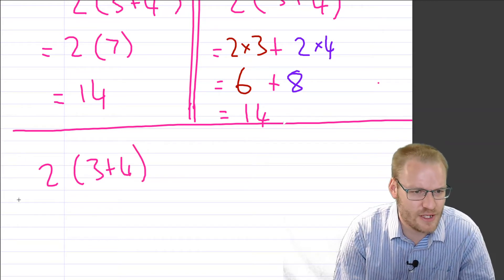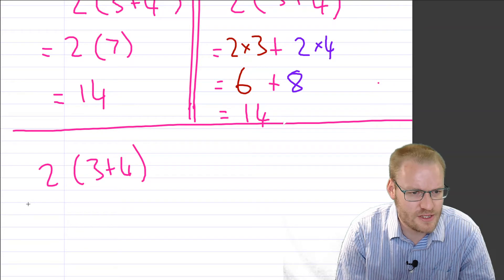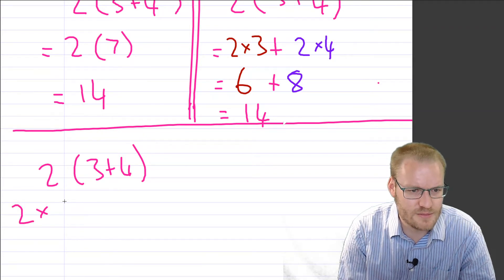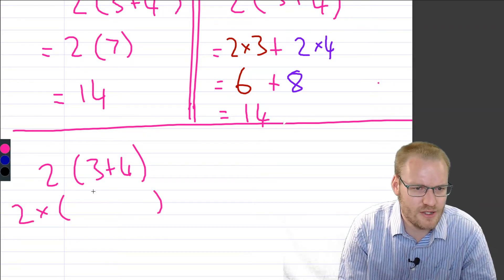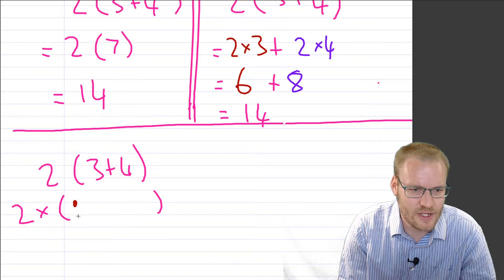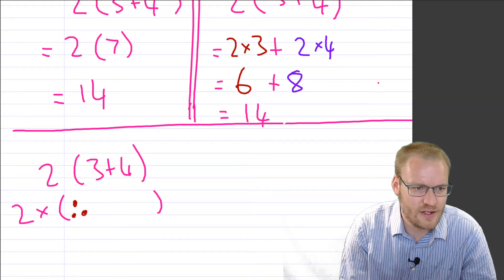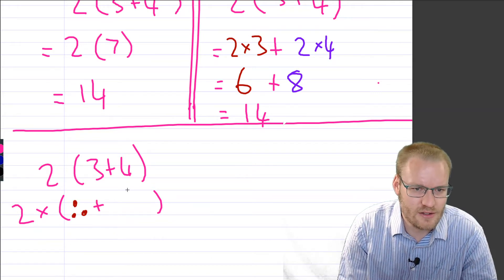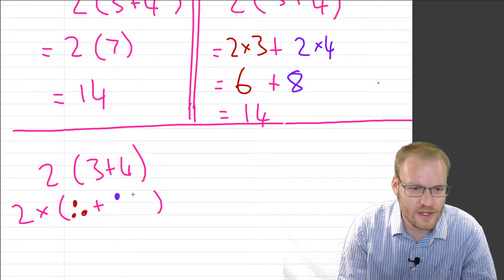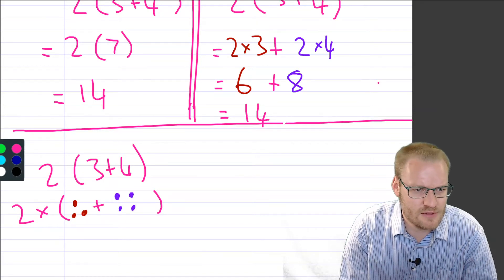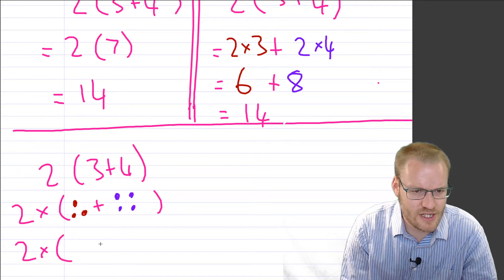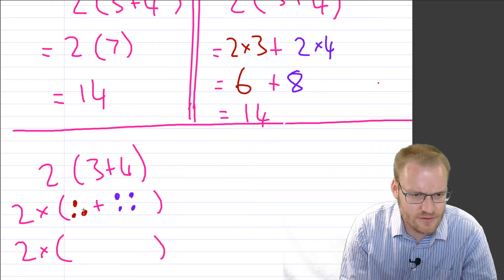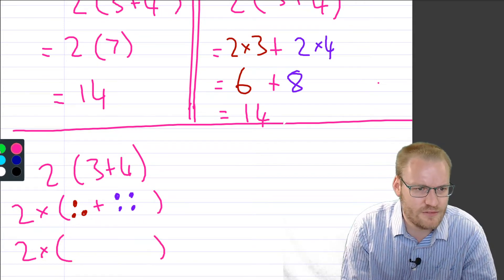Now previously you might have looked at this to go, well this is 2 times, and then in brackets, 3 we're going to say was like 1, 2, 3. And to that you're adding another 4. 1, 2, 3, 4. And you said, well, that's easy enough. That means 2 times, well, what's 3 plus 4? We've got 3 of these circles plus another 4. So we've got 1, 2, 3, 4, 5, 6, 7.